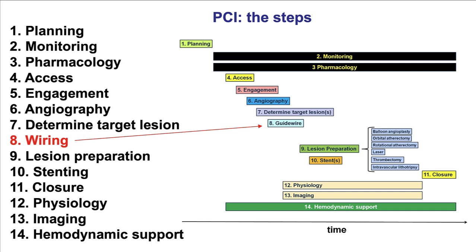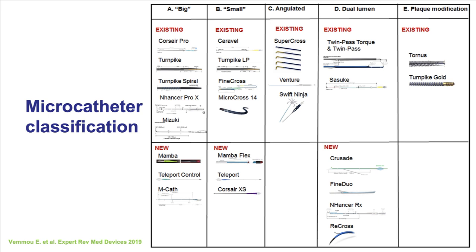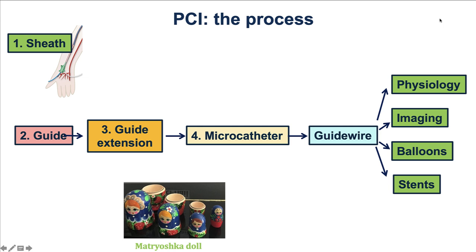Microcatheters can also be used for other purposes — for example, injecting contrast or medications, or delivering fat or coils in case of a perforation. This is a classification of microcatheters based on function as well as construction. Microcatheters are divided into five categories: larger outer diameter, smaller outer diameter, angulated, dual-lumen, and plaque modification microcatheters.